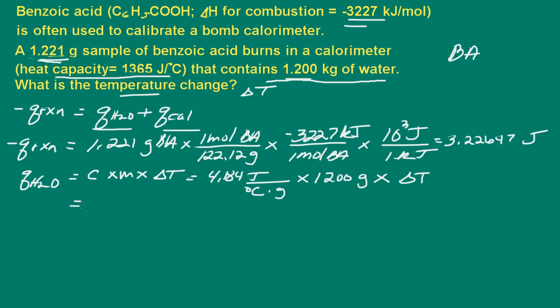We'll multiply that by delta T. We'll multiply these two terms together and end up with 5,020 joules times delta T.